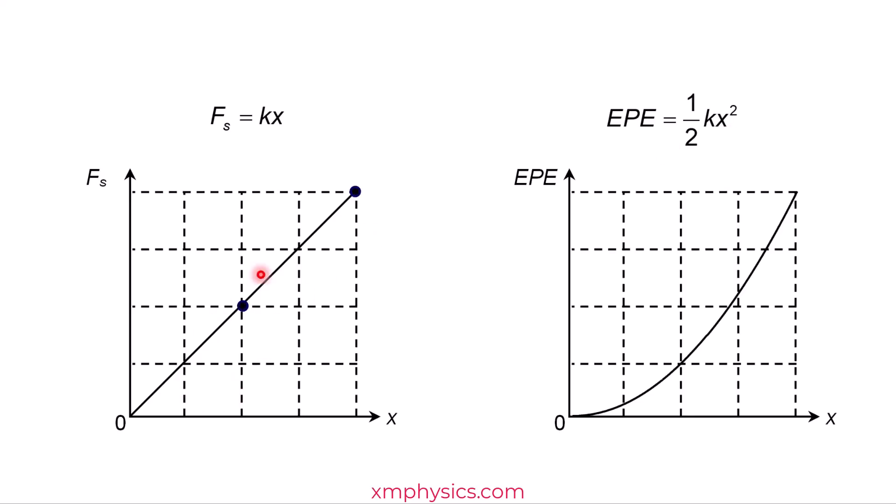So if you double the extension, you double the spring force. But if you double the extension, you quadruple the EPE. This should be obvious to you now, because to stretch the spring by this much, you've got to do this amount of work. This triangular area. But if you want to double the extension, you've got to do this amount of work. And this triangle is four times the area of this triangle.